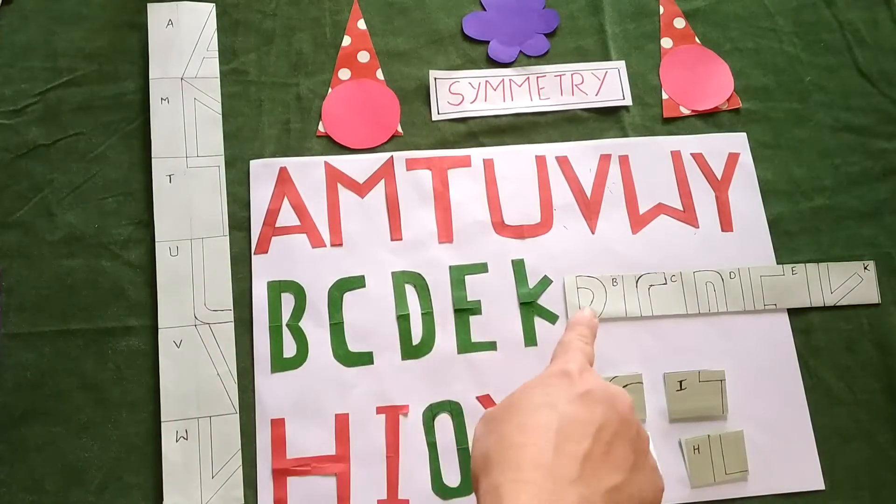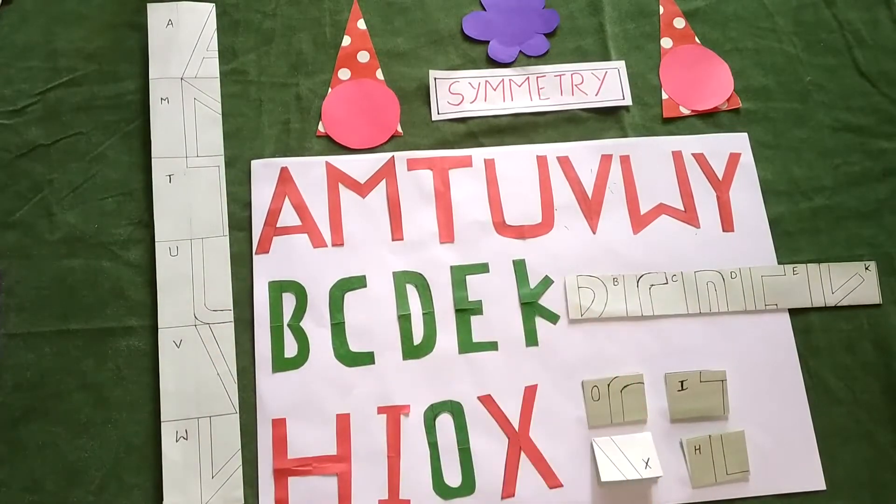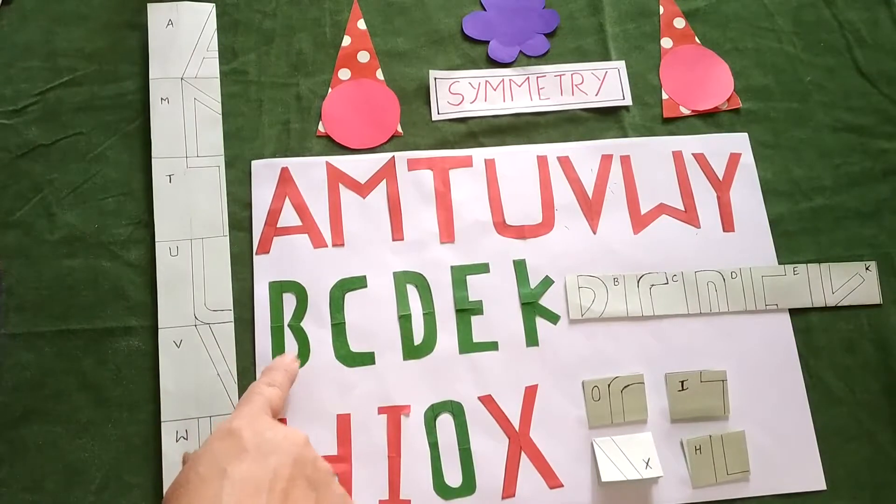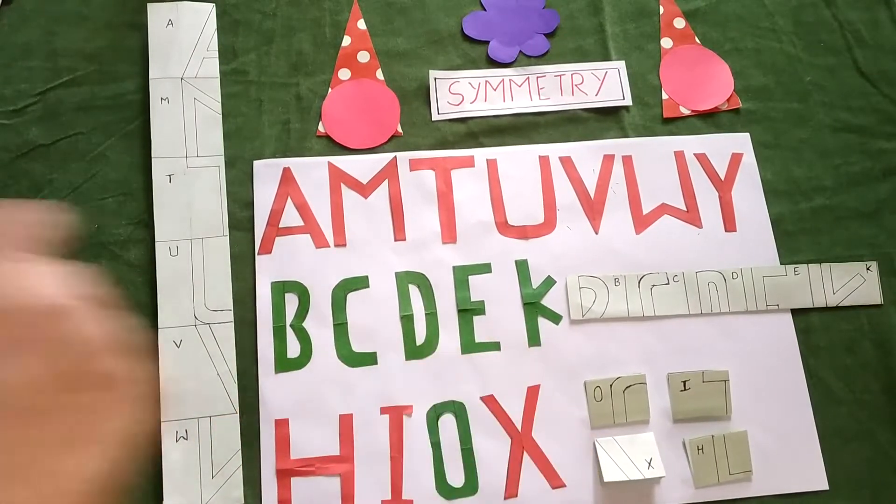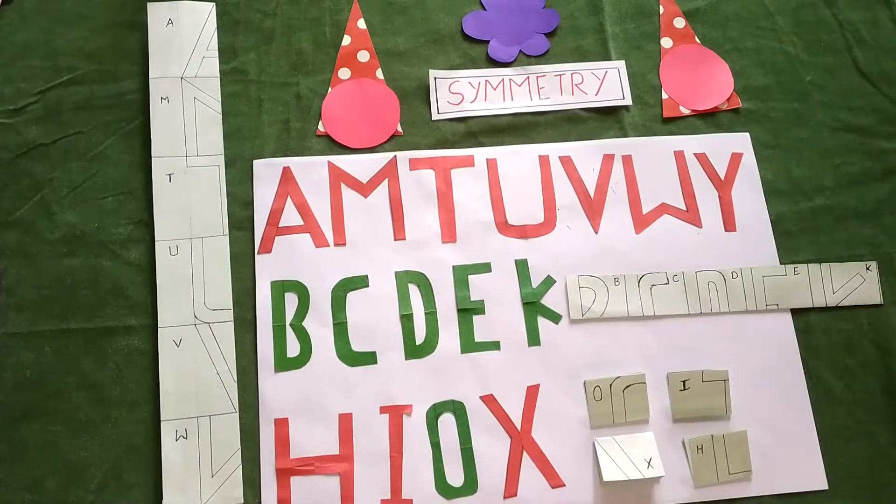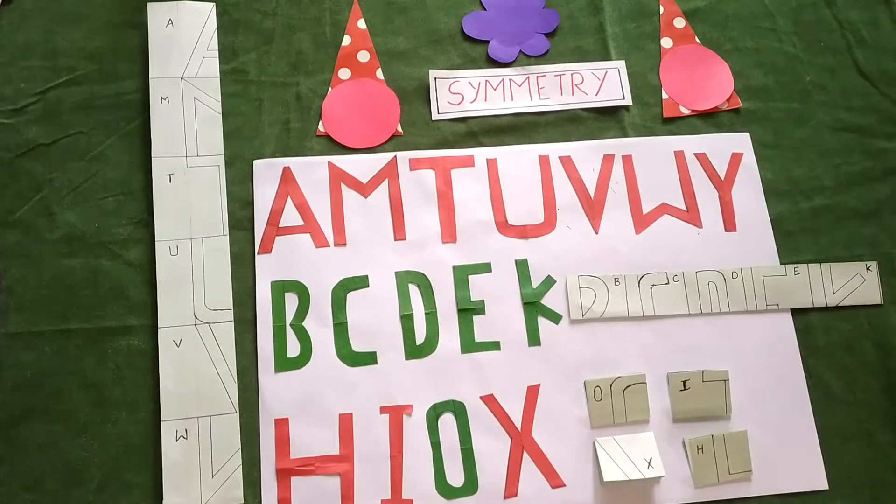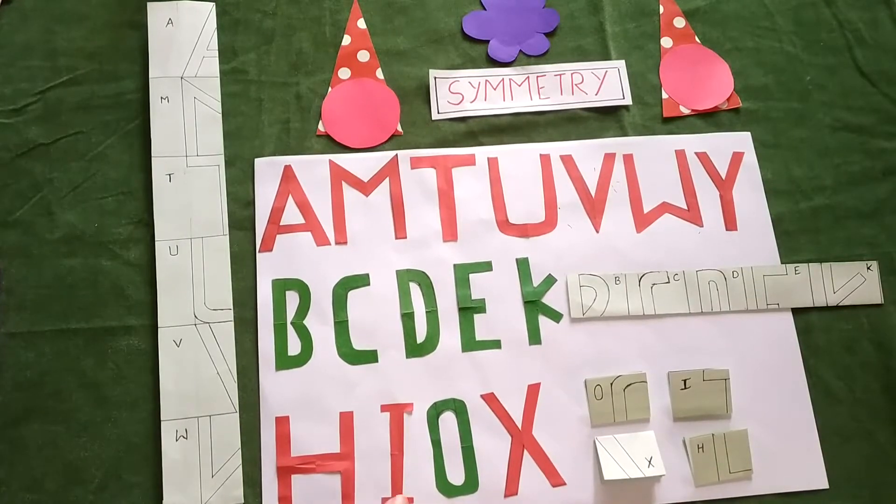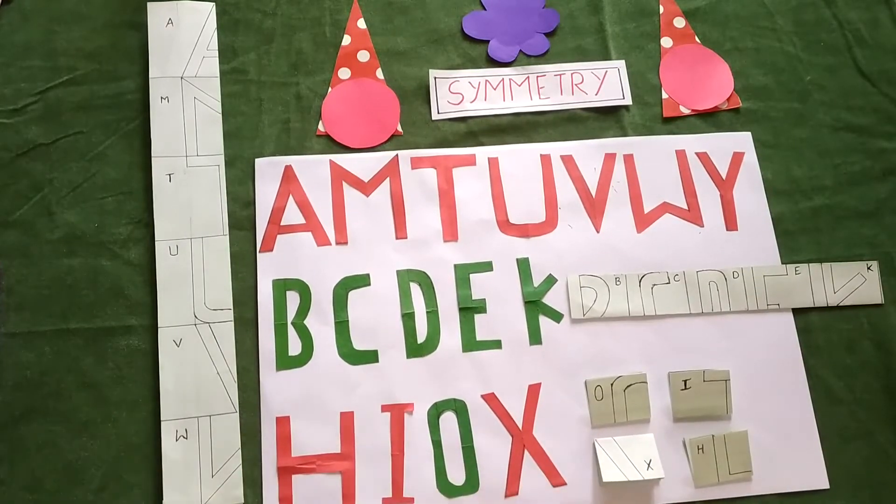The second group is for horizontal line of symmetry you can observe in B, C, D, E and K horizontal line of symmetry and the third group where you can see horizontal line of symmetry also and vertical line of symmetry also. So these letters are H, I, O and X.